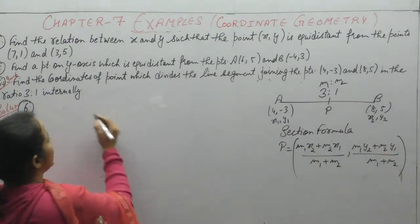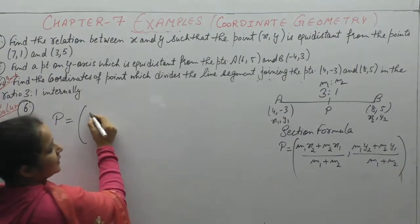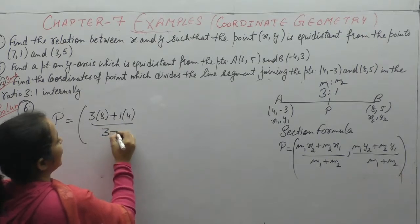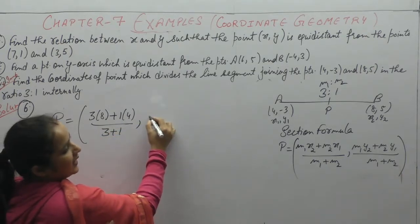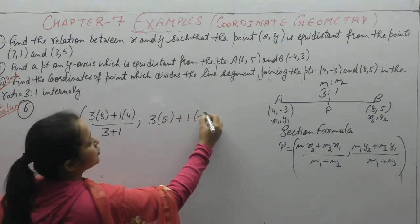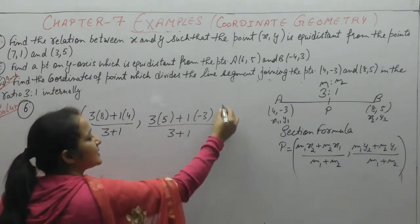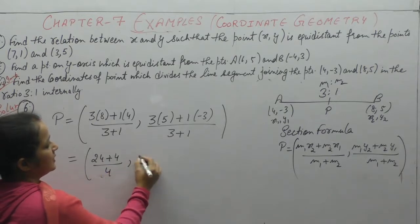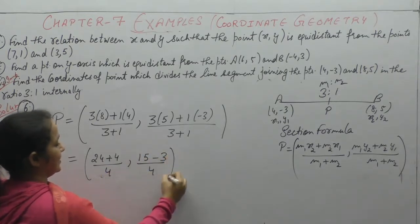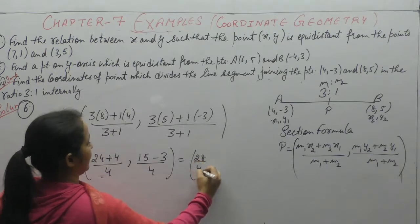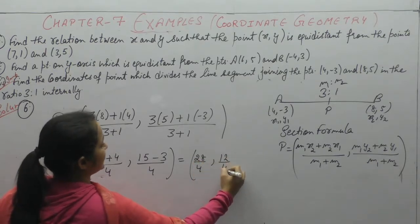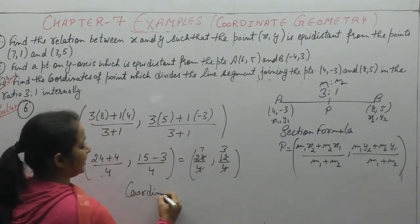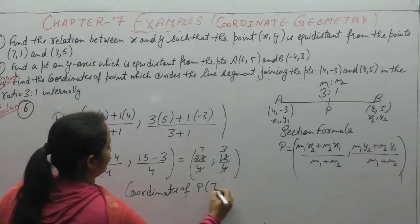By using section formula, coordinates of P: [(M1×x2 + M2×x1)/(M1+M2), (M1×y2 + M2×y1)/(M1+M2)]. This equals [(8×3 + 4×1)/(3+1), (5×3 + 1×(-3))/(3+1)] = [(24+4)/4, (15-3)/4] = [28/4, 12/4] = (7,3). So coordinates of P are (7,3).